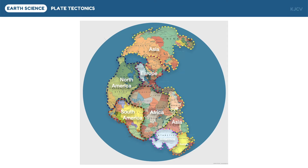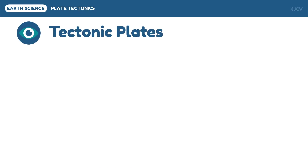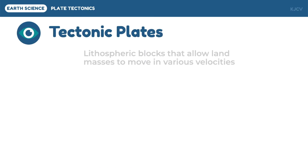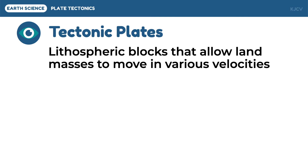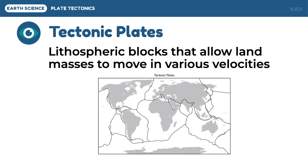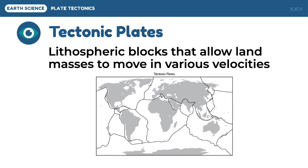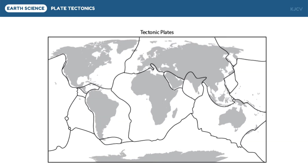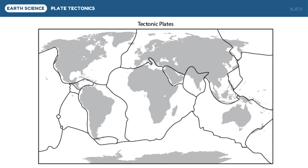It is now believed that the continents do not move on their own; rather, they are carried by slabs called tectonic plates. These are slabs or blocks in the lithosphere which allow the continents to move at various velocities. By the movement of these tectonic plates, new bodies of water and land masses are formed. This map shows the plates that move the continents.